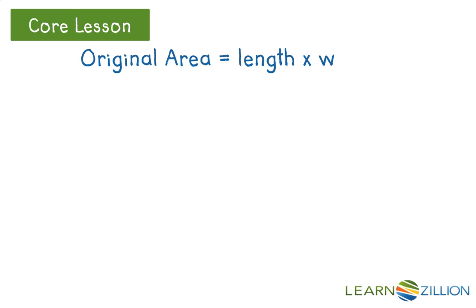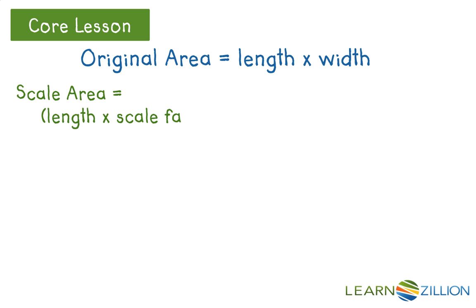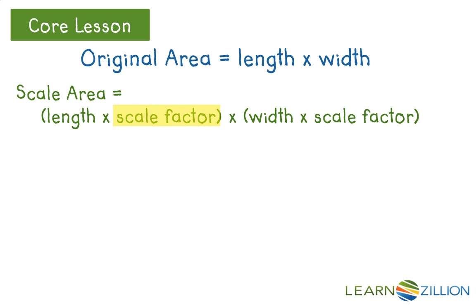Let's take a minute to analyze what we have. We know that the original area equals length times width. If we write out the equation, maybe we can see why the scale factor alone will not produce the scaled area. We also know that we can generate the scaled area by finding the scaled lengths. Scaled length equals length times scale factor, multiplied times width times scale factor. Notice in the equation for the scaled area using the dimensions that the scale factor is used twice. This is a clue.